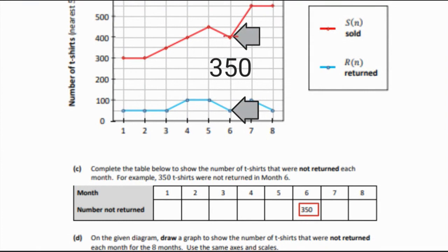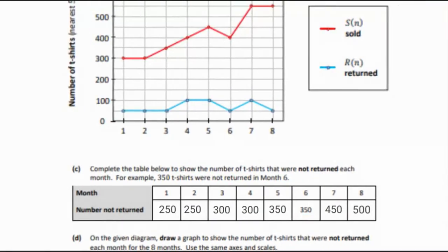You do this for every couple as you go for each month. For Month 1, it will be 300 sold minus 50 returned. Fill in your table, so we can see we have 250, 250.